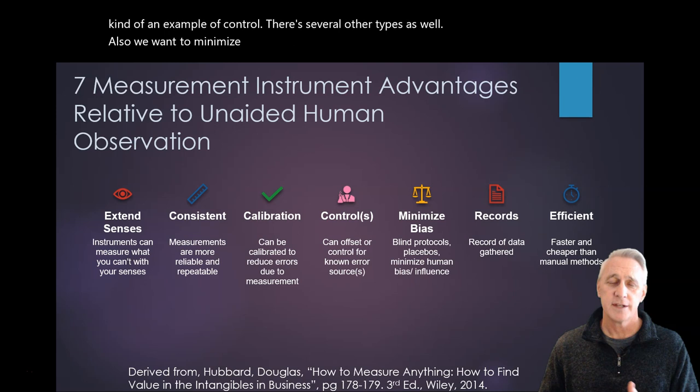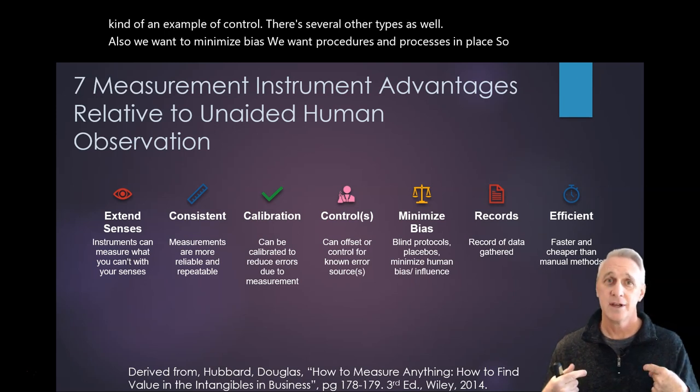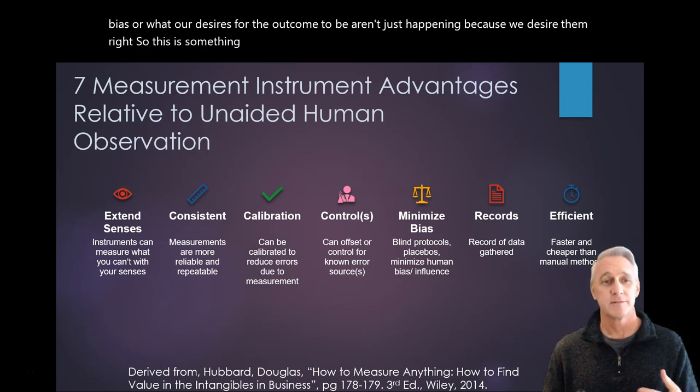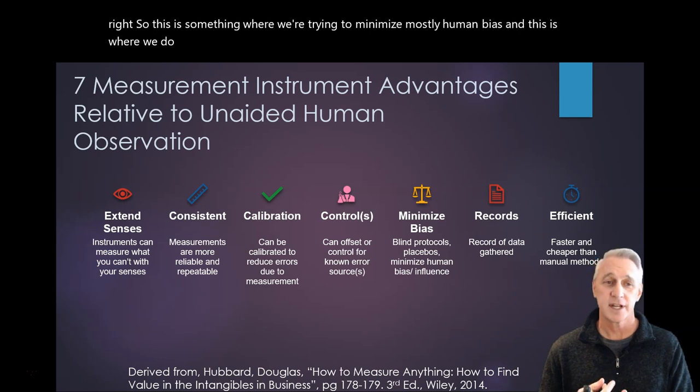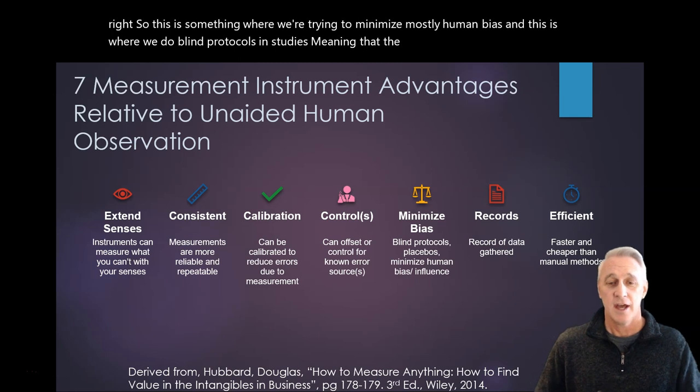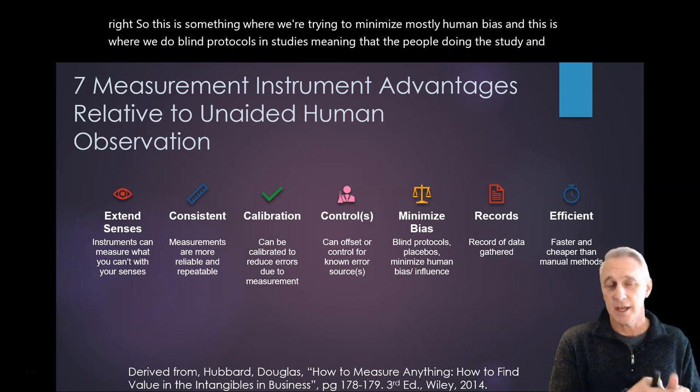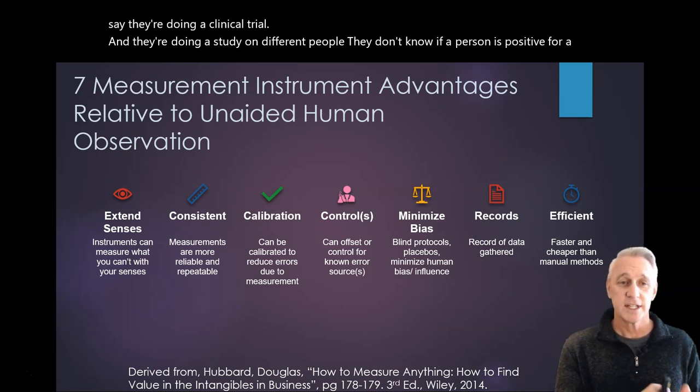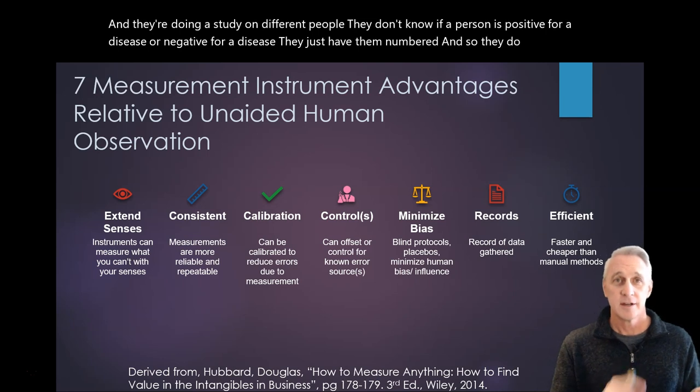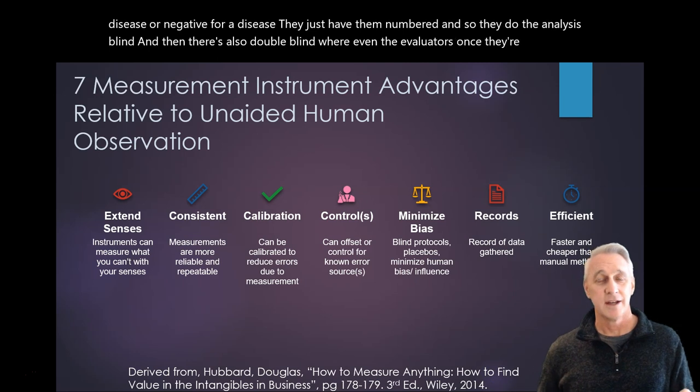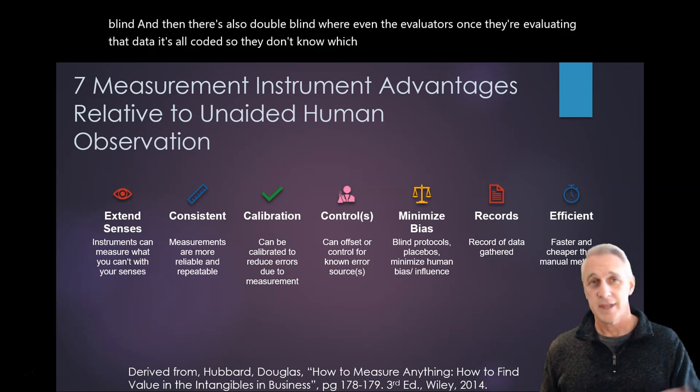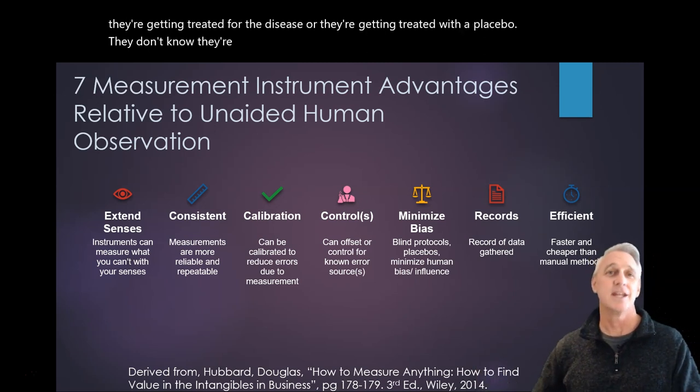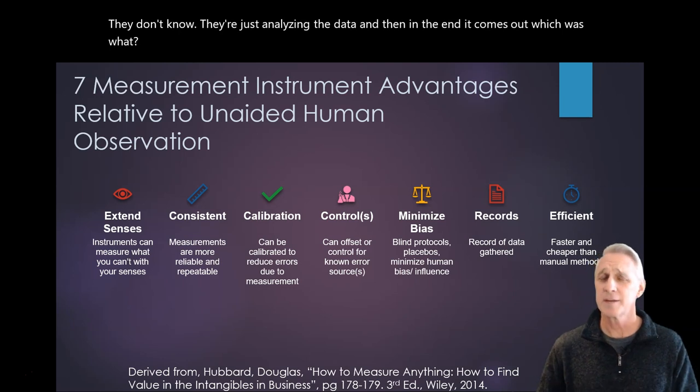Also, we want to minimize bias. We want procedures and processes in place so that our own bias or what our desires for the outcome to be aren't just happening because we desire them. So this is something where we're trying to minimize mostly human bias. And this is where we do blind protocols in studies, meaning that the people doing the study, let's say they're doing a clinical trial on different people. They don't know if a person is positive for a disease or negative for a disease. They just have them numbered, and so they do the analysis blind. And then there's also double blind where even the evaluators, once they're evaluating that data, it's all coded. So they don't know which way the actual patients may be, whether they're getting treated for the disease or if they're getting treated with a placebo. They're just analyzing the data. And then in the end, it comes out which was what. So that's a way they can minimize bias.